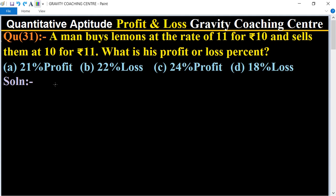Quantitative aptitude, chapter profit and loss, question number 31. A man buys lemons at the rate of 11 for rupees 10 and sells them at 10 for rupees 11. What is his profit or loss percent?